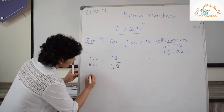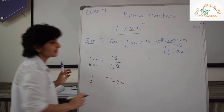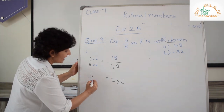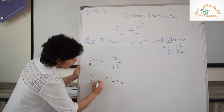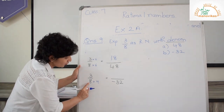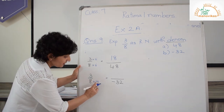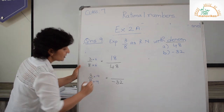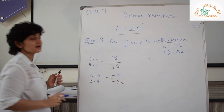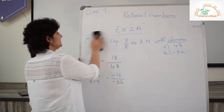Next, 3 upon 8 equal to what upon minus 32. Now 8 into what gives 32? 8 fours are 32. But remember I have a negative sign, so plus into minus gives me minus 32. If I multiply the denominator by minus 4, I must also multiply the numerator by minus 4. So my answer is minus 12 upon minus 32. I hope that is clear.